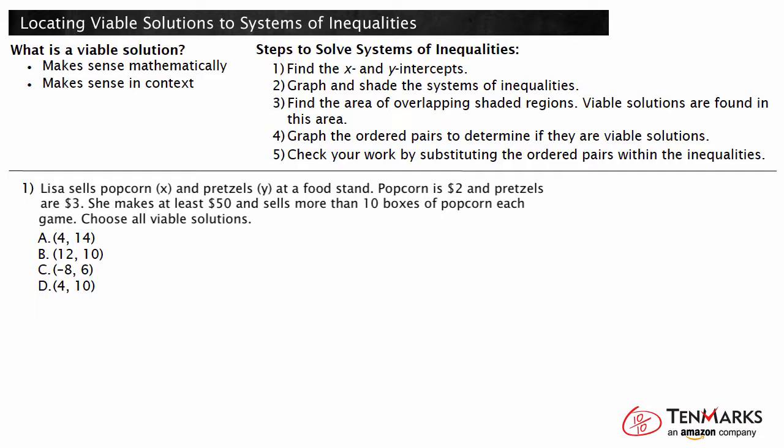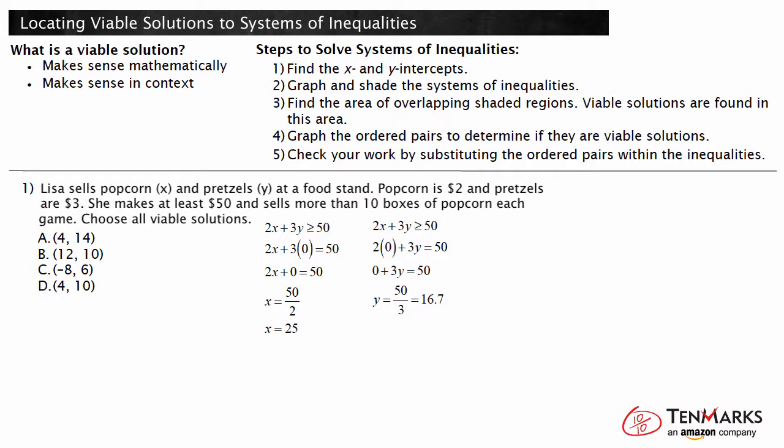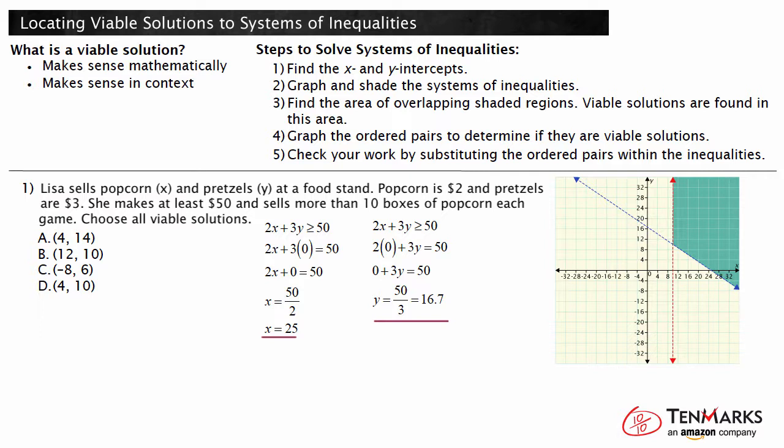In order to find the graph of our system of inequalities, we will first find the x and y-intercepts. To solve, we let y equal 0 and solve for x. Then we let x equal 0 and solve for y. We will draw our line through 25 and 16.7. Next, we will draw our lines on the coordinate plane.